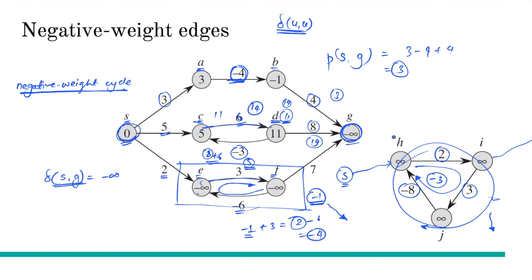Now there could be negative-weight cycles in a graph, but if the negative-weight cycle is not reachable from s, then that is not a problem.